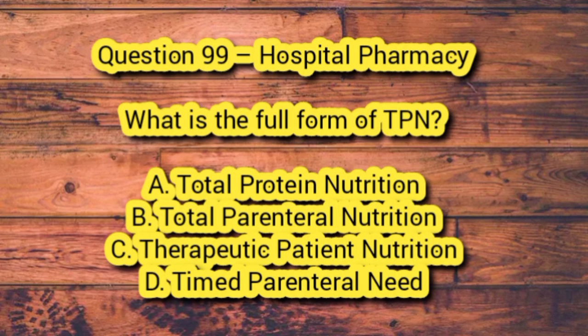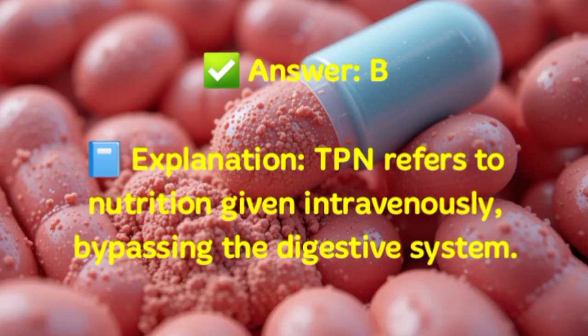Question 99 – Hospital Pharmacy. What is the full form of TPN? A. Total protein nutrition. B. Total parenteral nutrition. C. Therapeutic patient nutrition. D. Timed parenteral need. Answer: B. Explanation: TPN refers to nutrition given intravenously, bypassing the digestive system.